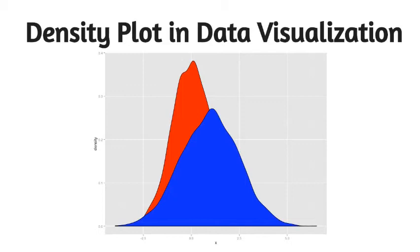An advantage density plots have over histograms is that they're better at determining the distribution shape because they're not affected by the number of bins used, each bar used in a typical histogram.